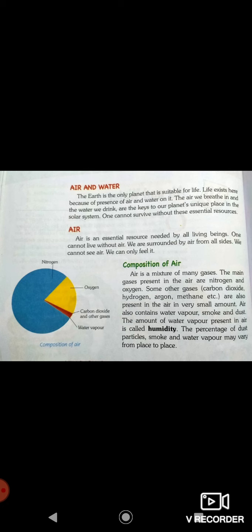Air and water. The earth is the only planet that is sustainable for life. Life exists here because of presence of air and water on it. The air we breathe in and the water we drink are the keys to our planet's unique place in the solar system. One cannot survive without these essential resources. Earth is the only planet in which life is possible because there is air and water here, and therefore the earth is a unique planet, a special planet. We use air in breathing and water in drinking, cooking and other things.